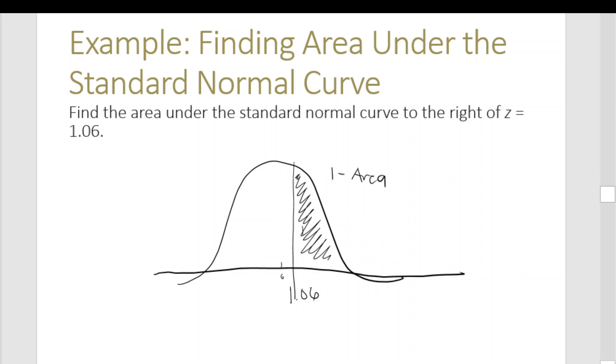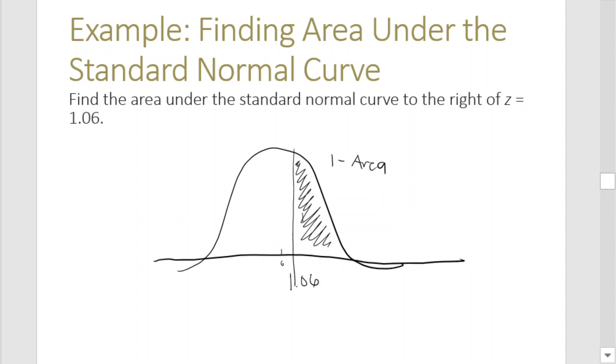Therefore, the area equals 1 minus 0.8554, which equals 0.1446. We can now proceed to the next problem.